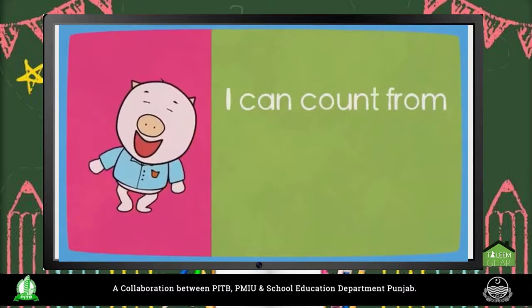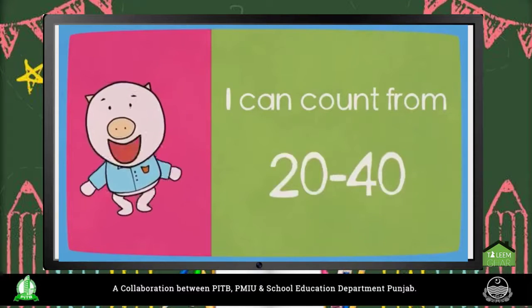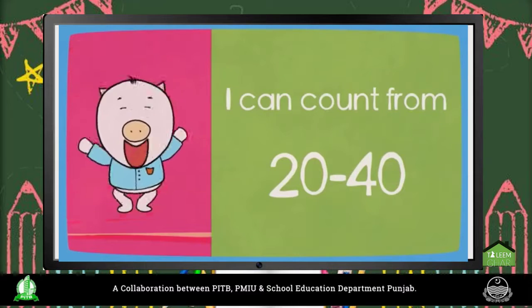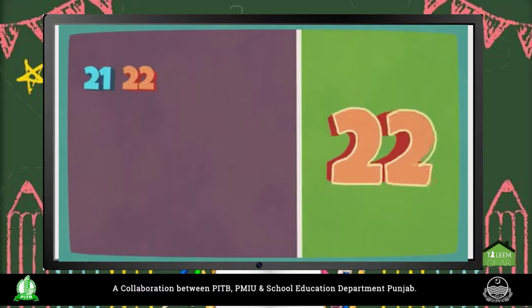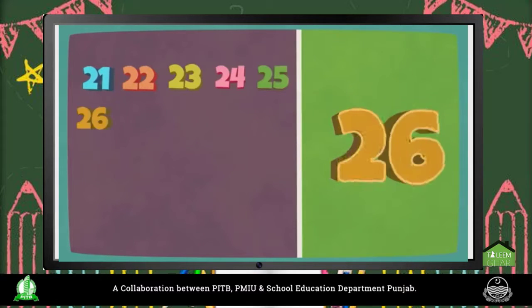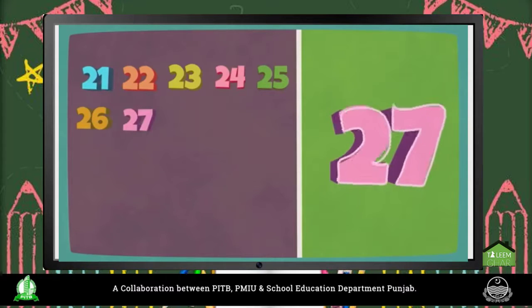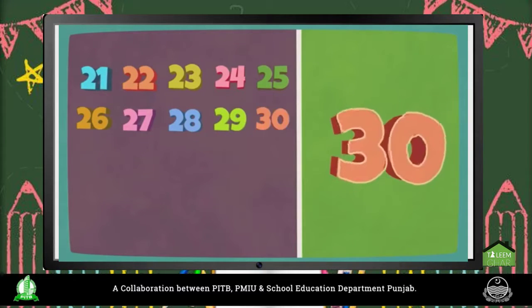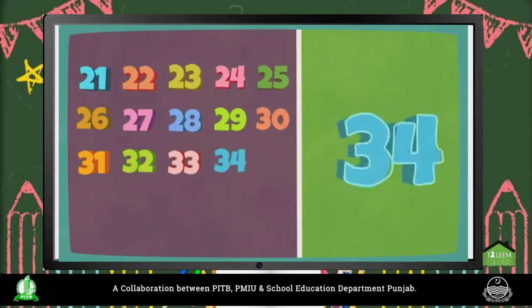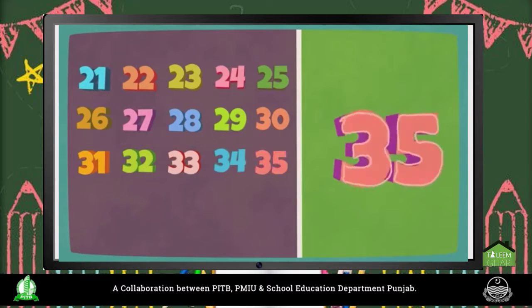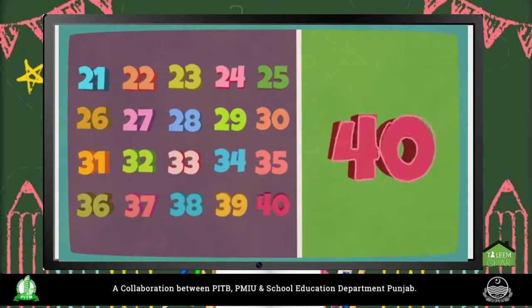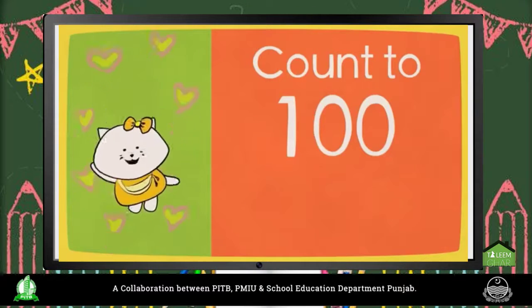Count to 100, come and count with me. I can count from 20 to 40. 21, 22, 23, 24, 25, 26, 27, 28, 29, 30, 31, 32, 33, 34, 35, 36, 37, 38, 39, 40.